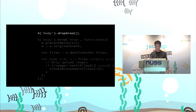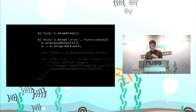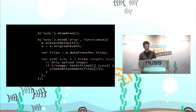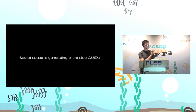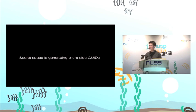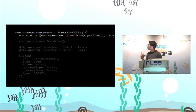So this is what we made. We're using the HTML5 drag-and-drop APIs — as you can see, we're binding to the drop event, accessing the original event because jQuery proxies it, and then iterating over all the files contained in the event. We test if they're images, and if they are, we call this createAttachment function. Before I get into that function, I want to talk about its secret sauce.